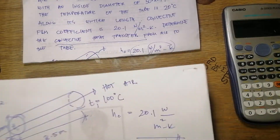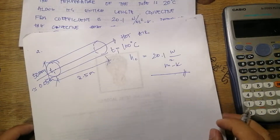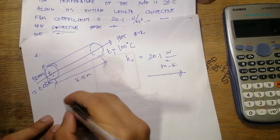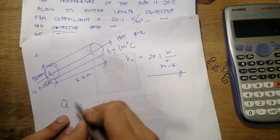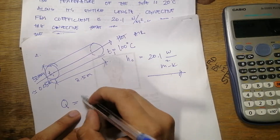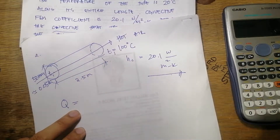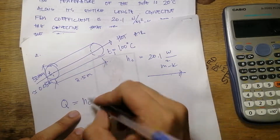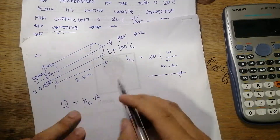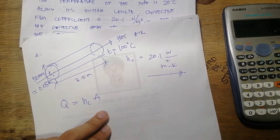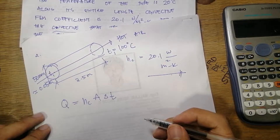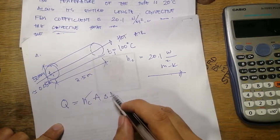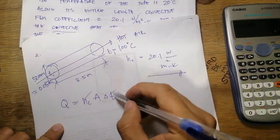The formula we will use for this kind of problem is Q, which is equal to the convective film coefficient hc multiplied by the area, and of course the change in temperature.